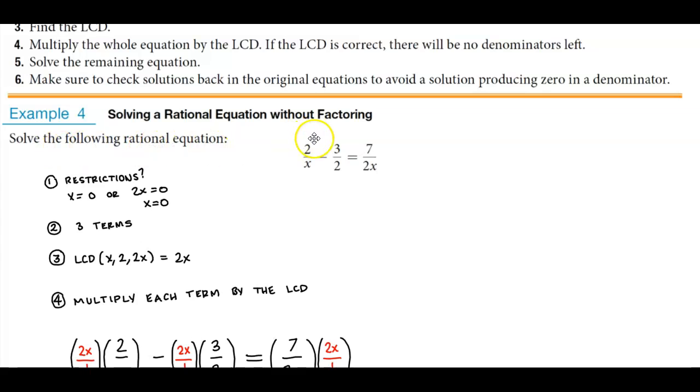For this example, we have 2 over x minus 3 over 2, which is equal to 7 over 2x. The first thing we want to do is, are the denominators factored? Yes, there's nothing that we need to do to factor any of the denominators.